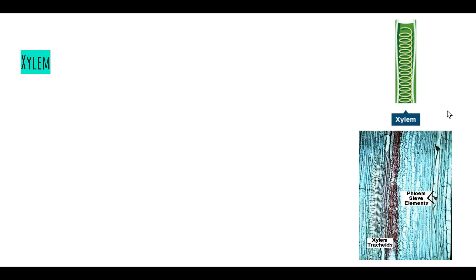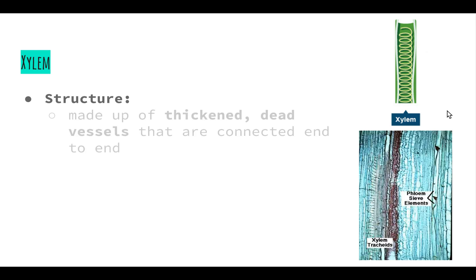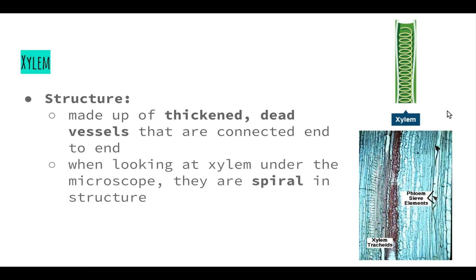The next cells to look at are the xylem cells. Xylem cells form part of the vascular tissue of plants, which is very similar to the circulatory system in animals. Their structure is that they are made up of thickened dead vessels connected end to end to make extremely long vessels that run all the way from the very bottom of the plant to the very top. When looking at xylem under the microscope, we can see they look spiral in structure, though under the microscope it just looks like lots of little hatched lines.